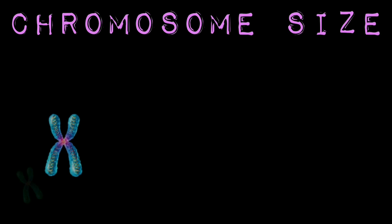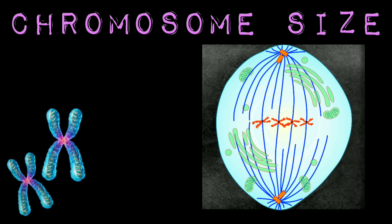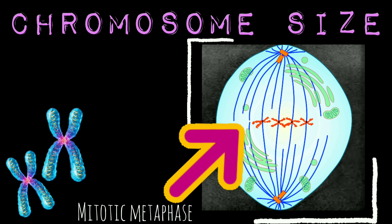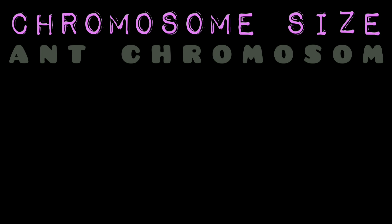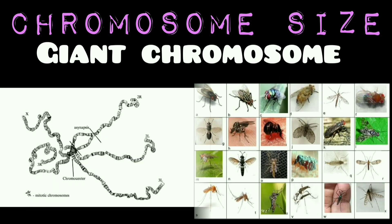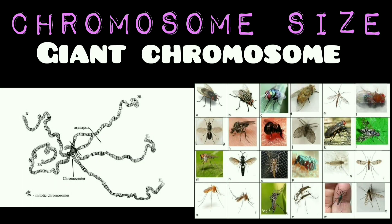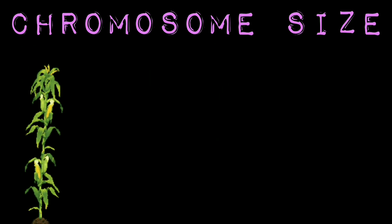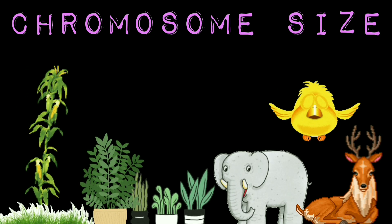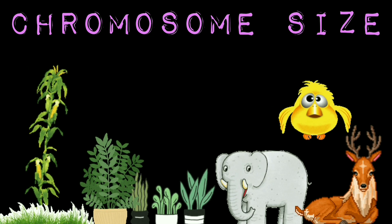Chromosomes are generally studied and measured during mitotic metaphase when they are very thick, quite short and well-spread in the cell. The longest metaphase chromosomes are found in Trillium, which is 32 microns long. The giant chromosomes found in Diptera are permanently in pre-metaphase stage, so they are easily visible in the interphase nucleus. Plants have longer chromosomes than animals.